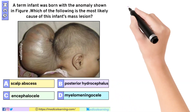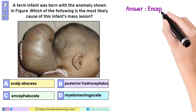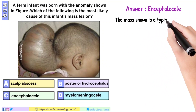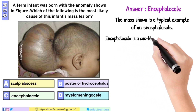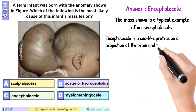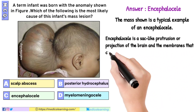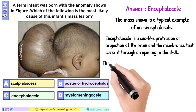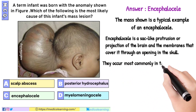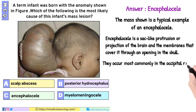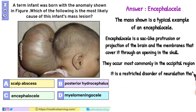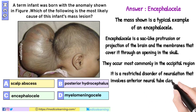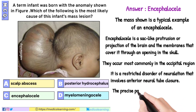In this question, the answer is Encephalocele. The mass shown is a typical example of an encephalocele. Encephalocele is a sac-like protrusion or projection of the brain and the membranes that cover it through an opening in the skull. They occur most commonly in the occipital region, 70-80% of cases. It is a restricted disorder of neurulation that involves anterior neural tube closure. The precise pathogenesis is unknown.